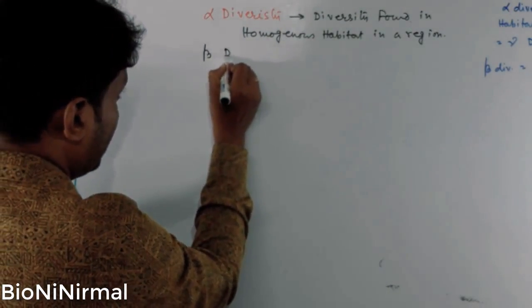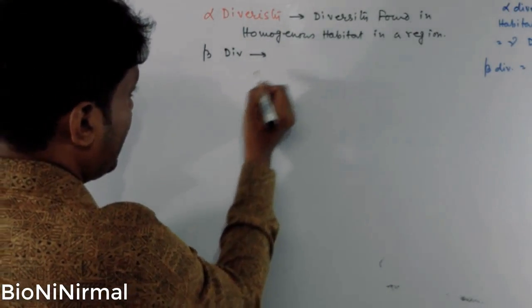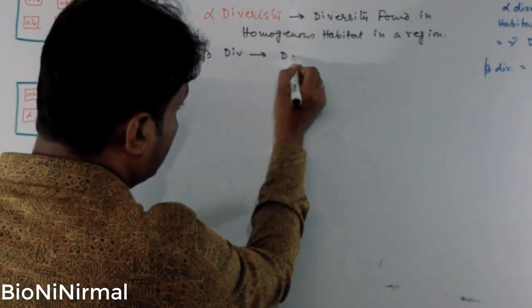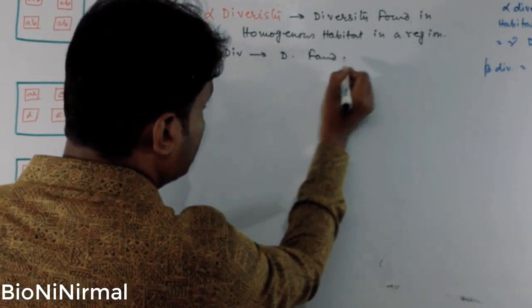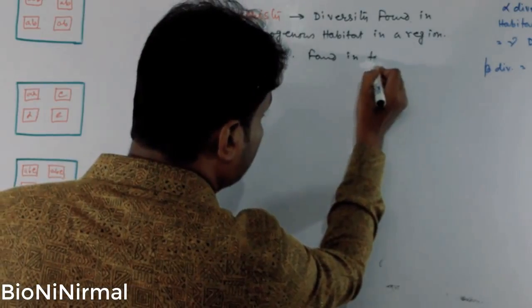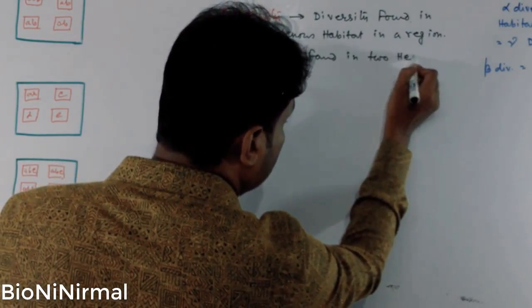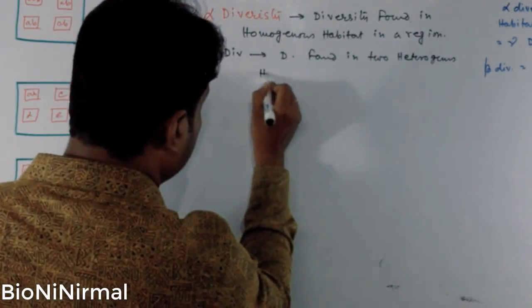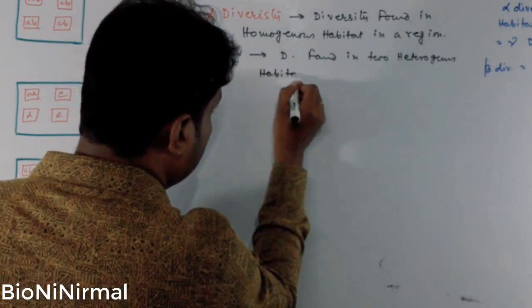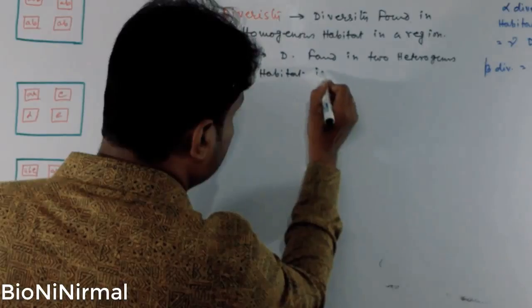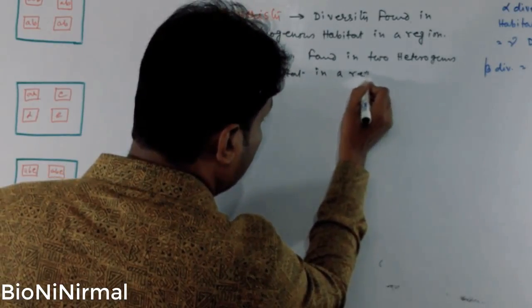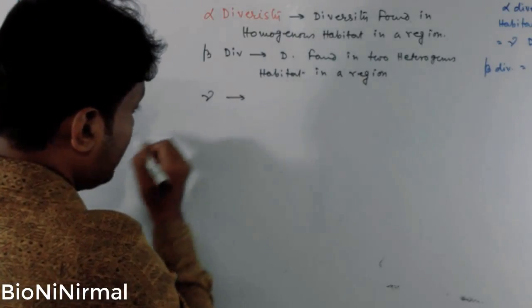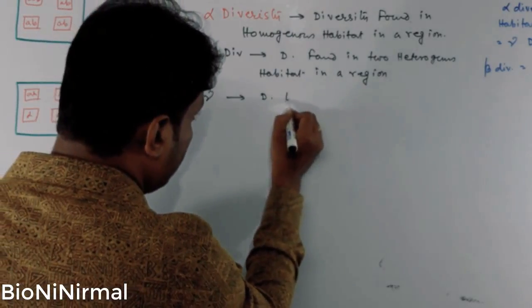Beta diversity means the diversity found between two heterogeneous habitats in a region. This is called beta diversity.